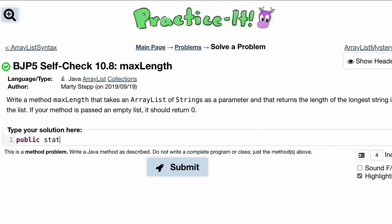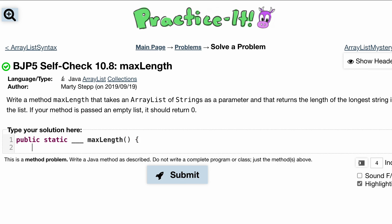So we'll do public, static, we don't know the return type yet, so I'll just leave it like this. It's called maxLength, and we're going to be inside of here. It takes an ArrayList of strings as a parameter.